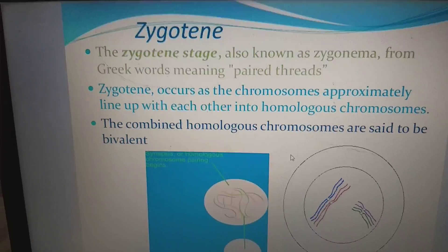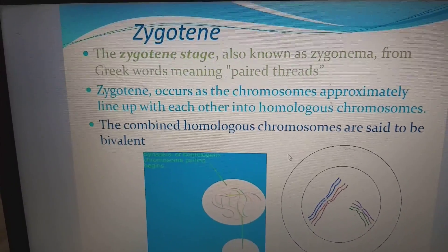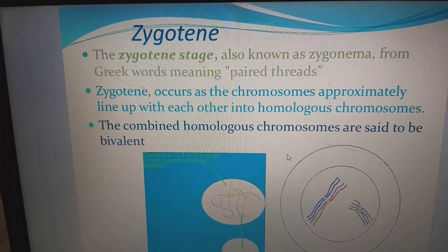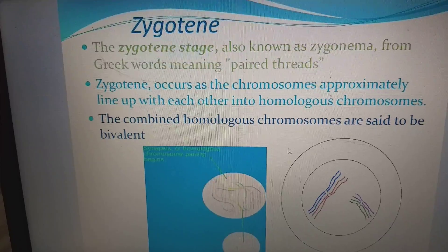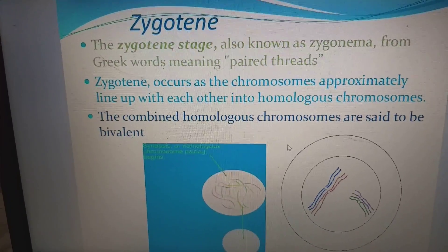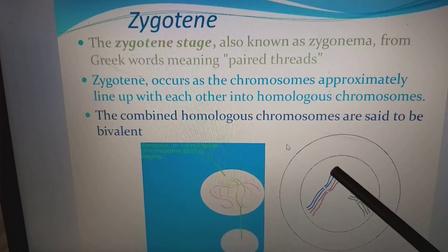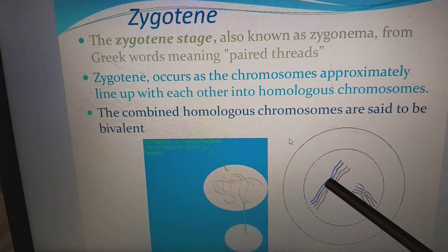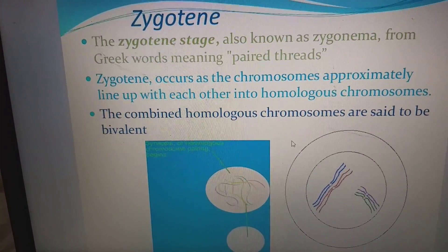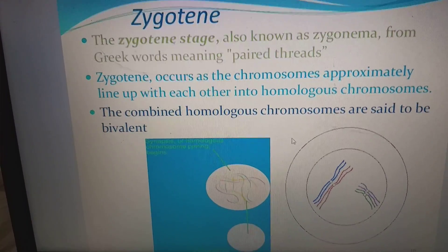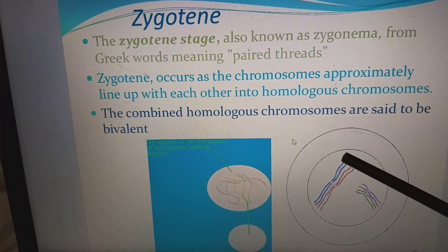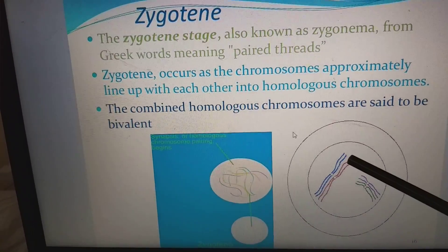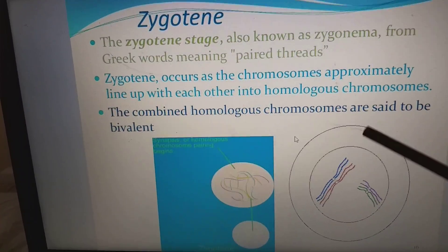The zygotene stage is also known as zygonema, from the Greek word meaning paired threads. Zygotene occurs as the chromosomes approximately line up with each other into homologous chromosomes. This combination of homologous chromosomes is called a bivalent — named based on the number of chromosomes (two centromeres). We also call this a tetrad, which is nomenclature based on the number of chromatids — four chromatids total. So bivalent refers to number of chromosomes; tetrad refers to number of chromatids. This pairing of homologous chromosomes — one from father and one from mother — is called the synaptonemal complex, where they come close and line up from top to bottom.